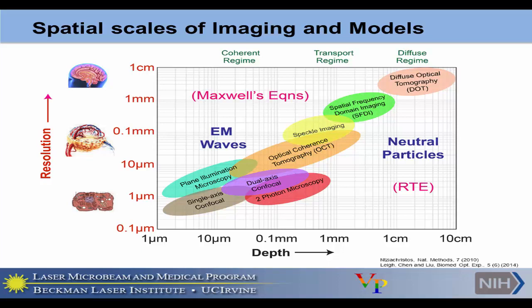Looking at a chart of microscopy techniques, in techniques on the left-hand side the coherent nature of light is very important. That means we have to consider light as an electromagnetic wave — we have to use Maxwell's equations. Some people use the RTE in this region, but when we try to apply RTE to coherent regime, we lose accuracy because it doesn't properly model the coherent nature of the light.